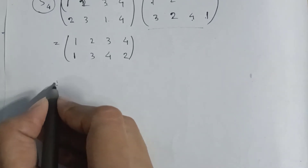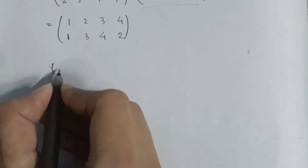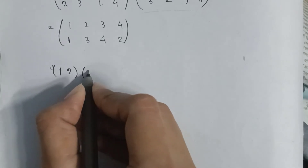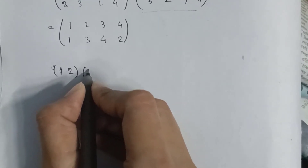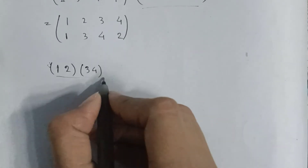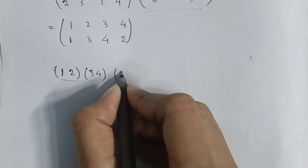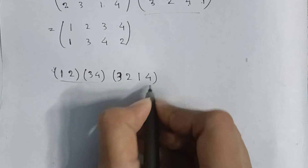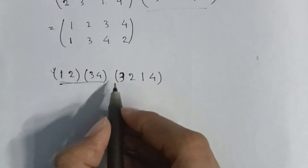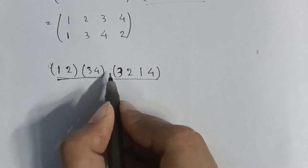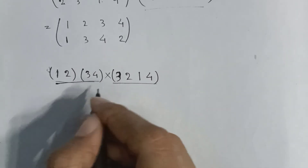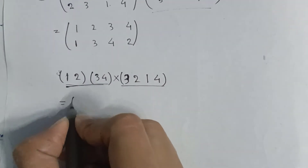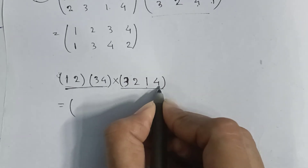Now the short trick for multiplying two cycles, or cyclic representation. Let us take the permutation one two three four, and multiply it by another permutation like three two one four. One goes to four in the first, and four goes to three in the second, so one goes to three.